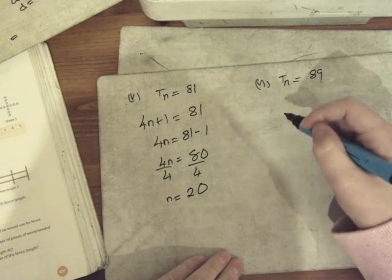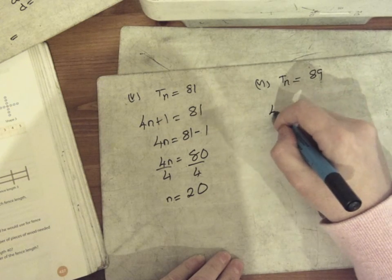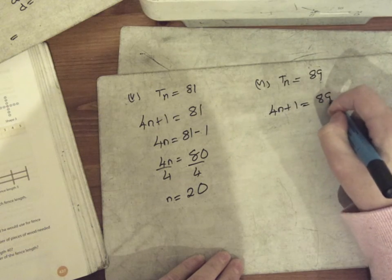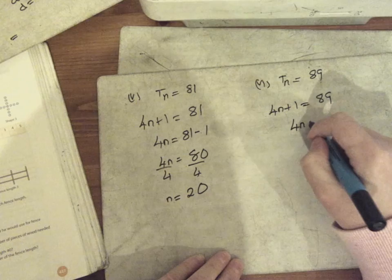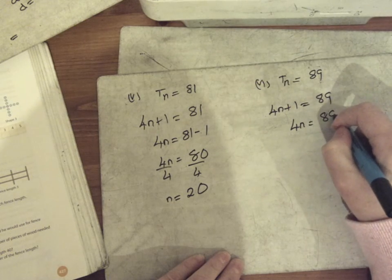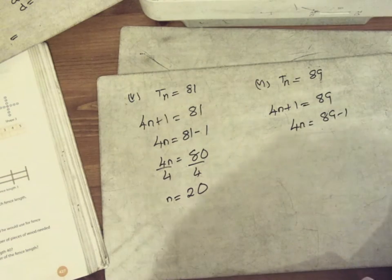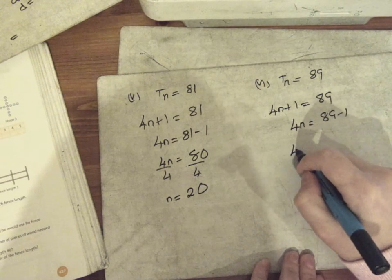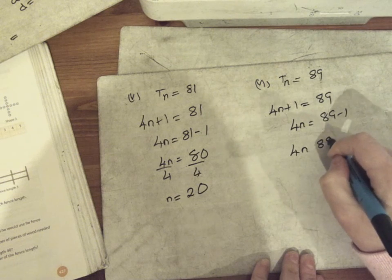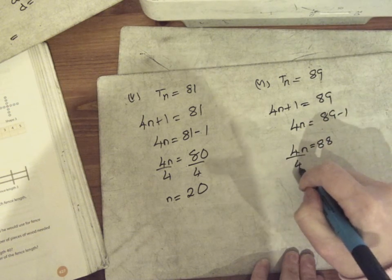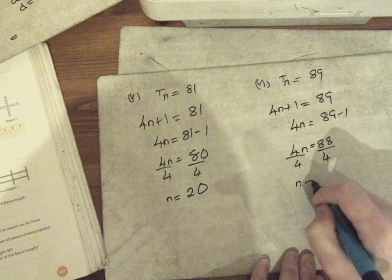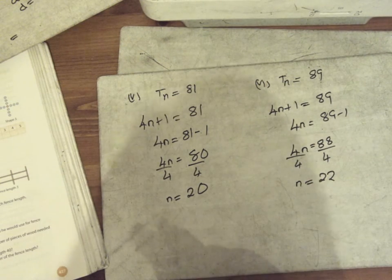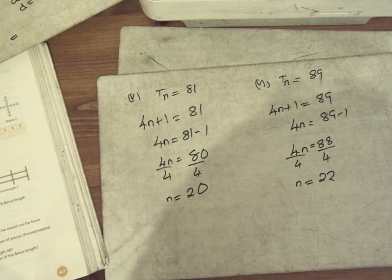Then they said, does any term have 89 circles? So does 4n plus 1 ever equal 89? Move the plus 1 over: 4n equals 88. Divide each side by 4 and you get n equals 22. So the answer is yes — term number 22 has 89 circles. That's the end of last night's homework.